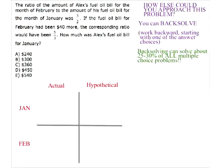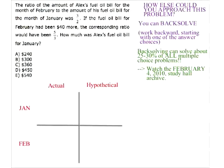If you don't know what back-solving is or if you don't ever use it, make sure you watch one of the other study halls. Back-solving can solve about 25 to 30% of all multiple-choice problems. That's amazing — it's so much better than any single textbook technique. So this should be your number one priority if you don't know how to do it already. Watch the February 4th, 2010 study hall archive. Let's back-solve — let's start with choice C.